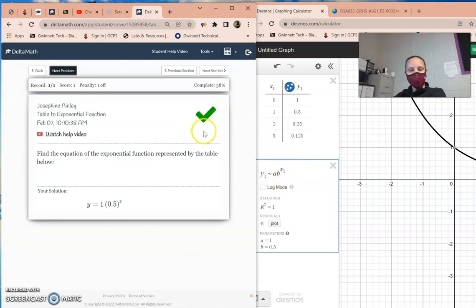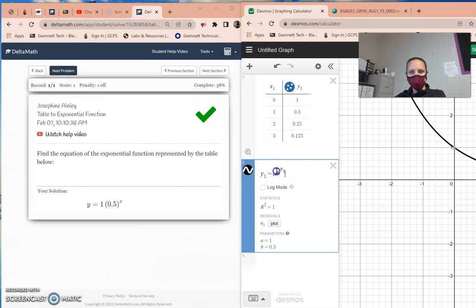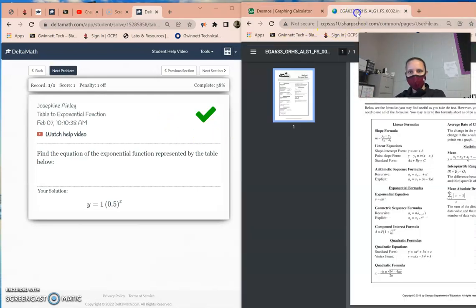So that's how you go from a table to an equation. And while I'm on this, any table, you can go to the exponential, or you can go to linear. So linear, you'd use this equation, and it will give you m and b. Or you can go to quadratic and put this equation in right here, and it will give you a, b, and c. So same process for every single table.